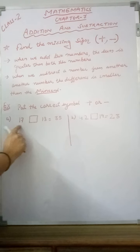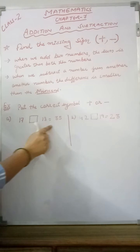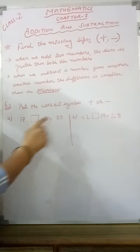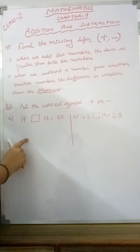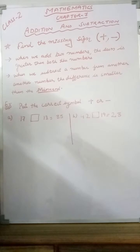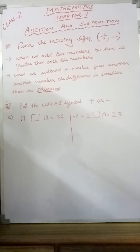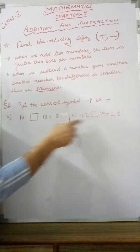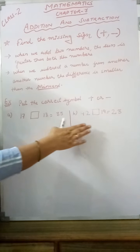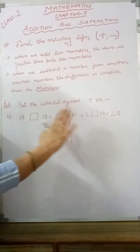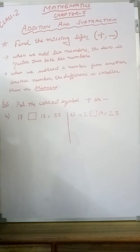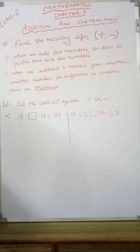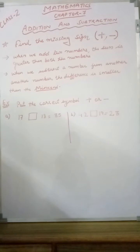Students, whenever these types of statements are given, they are called number statements. You have read statements for word problems — those are called statements in a word problem. But these are called number statements because only numbers are written. The questions are given in the form of numbers. Let's see how to find which sign should be put in the blank.